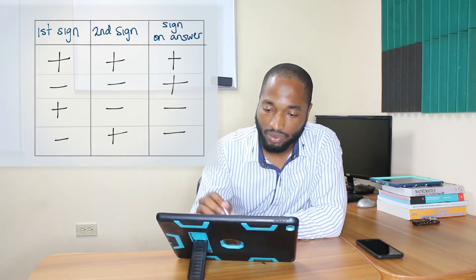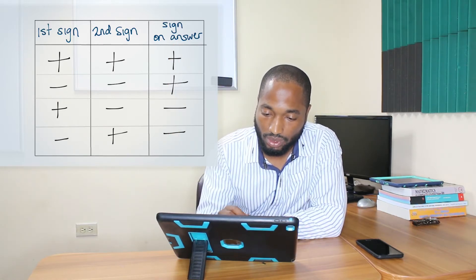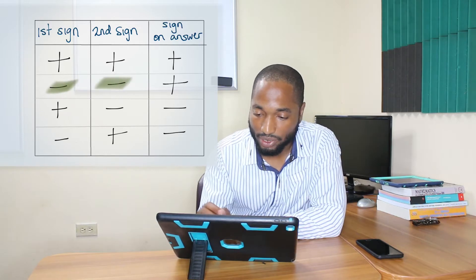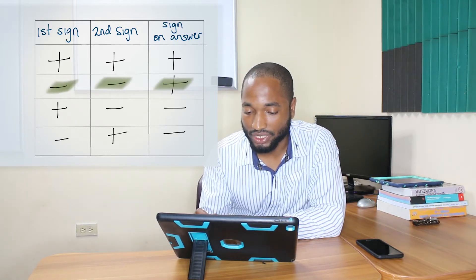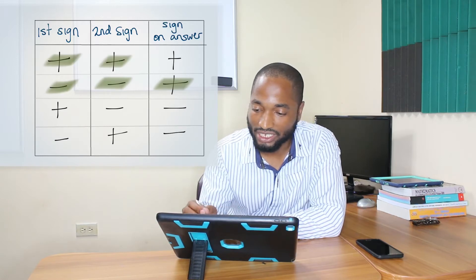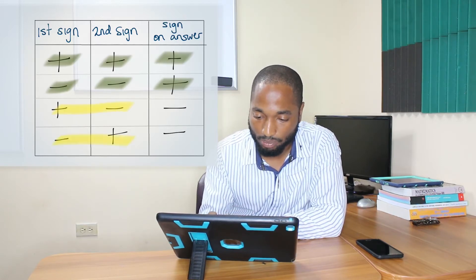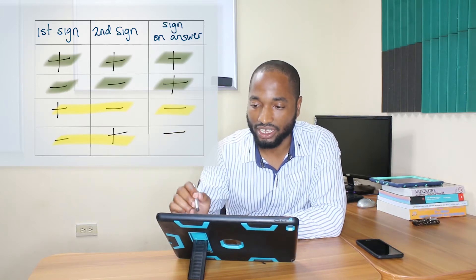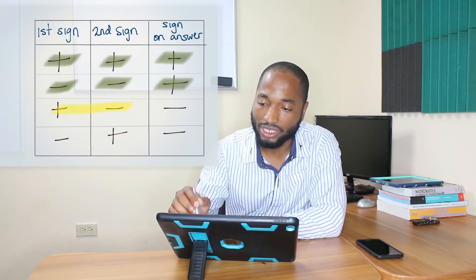So for example, if the first number has a negative sign and the second number has a negative sign, the answer should be positive. And what you'll notice in this table is if the signs are the same, the answer is positive. But if the signs are mixed up, the answer is negative. So that's what you can use to memorize the table.